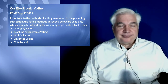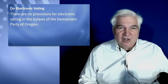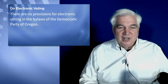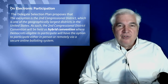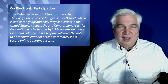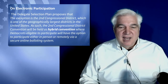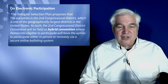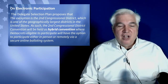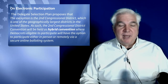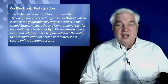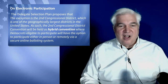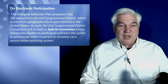On electronic participation: this is their proposal for solving the problem with the 2nd Congressional District because it is so geographically large. The plan says the 2nd Congressional District will be held as a hybrid convention where Democrats eligible to participate will have the option to participate either in person or remotely via a secure online balloting system. However, that system remains unidentified and is not authorized, so this is going to be a stretch to pull off.